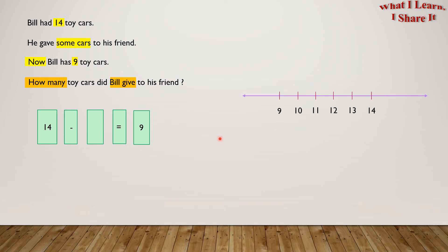Here it is. We will start from 14 and count backwards till we reach 9. 1, 2, 3, 4, 5. Since we went 5 steps, so 14 minus 5 equals 9.